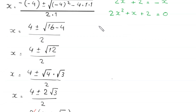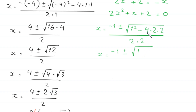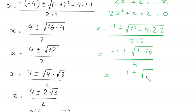Using the quadratic formula on 2x squared plus x plus 2 equals 0, with a equals 2, b equals 1, c equals 2: x equals negative 1 plus or minus the square root of 1 squared minus 4 times 2 times 2, all divided by 2 times 2. This gives x equals negative 1 plus or minus the square root of 1 minus 16, over 4, which is negative 1 plus or minus the square root of negative 15, over 4.